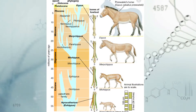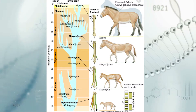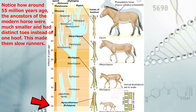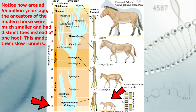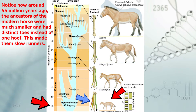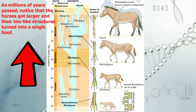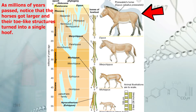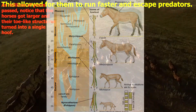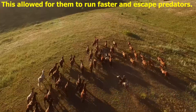Let's compare the modern-day horse to its ancestors from millions of years ago. Notice how around 55 million years ago, ancestors of the modern horse were much smaller and had distinct toes instead of one hoof. This made them slow runners. As millions of years passed, notice that the horses got larger and their toe-wide shoulders turned into a single hoof.